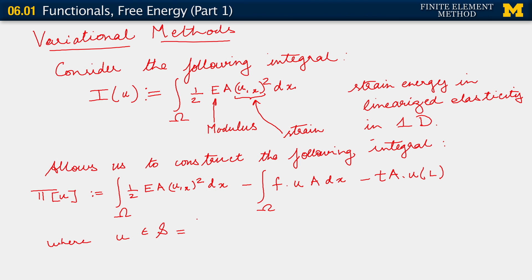So u belongs to S, which now consists of all functions u such that we're thinking of this in the context of our Dirichlet Neumann problem. So we're thinking of this in the context of the Dirichlet condition. U at 0 equals u naught. And F, T, and the constitutive relation that we are familiar with. Sigma equals E u_x. All of these are given.